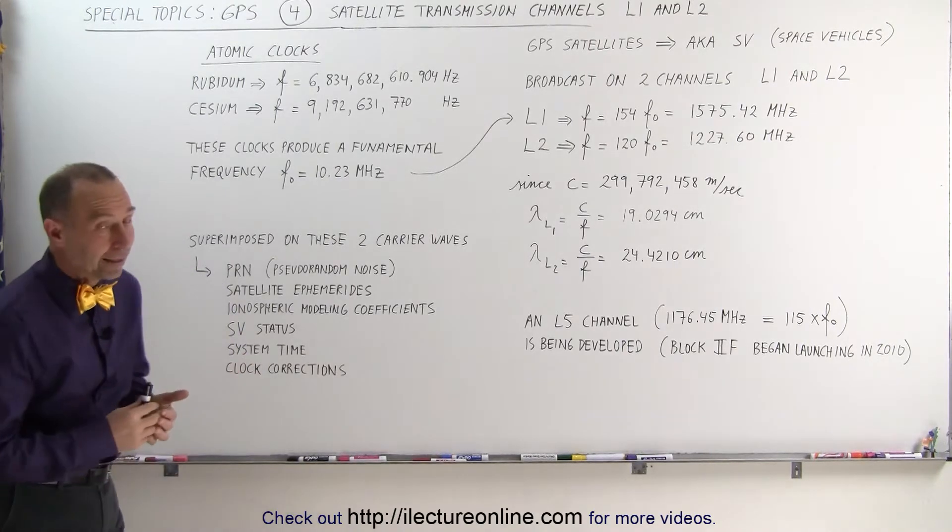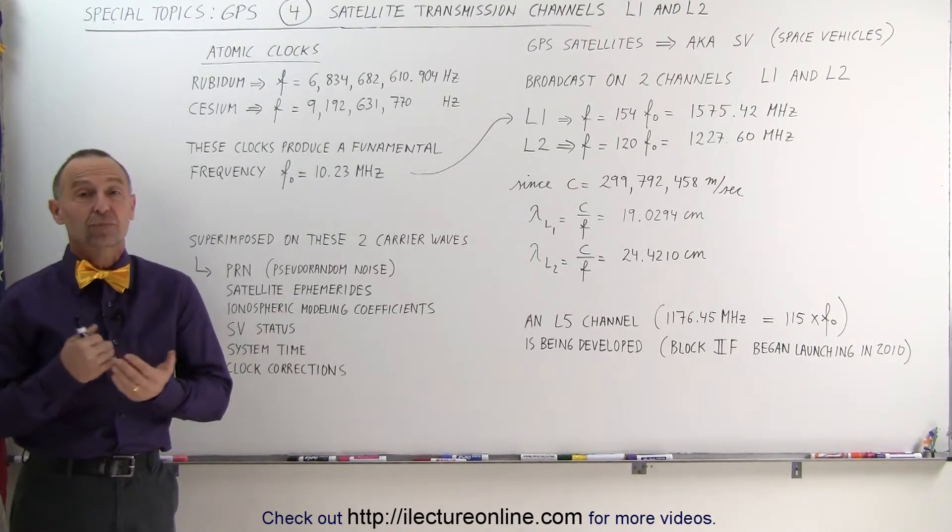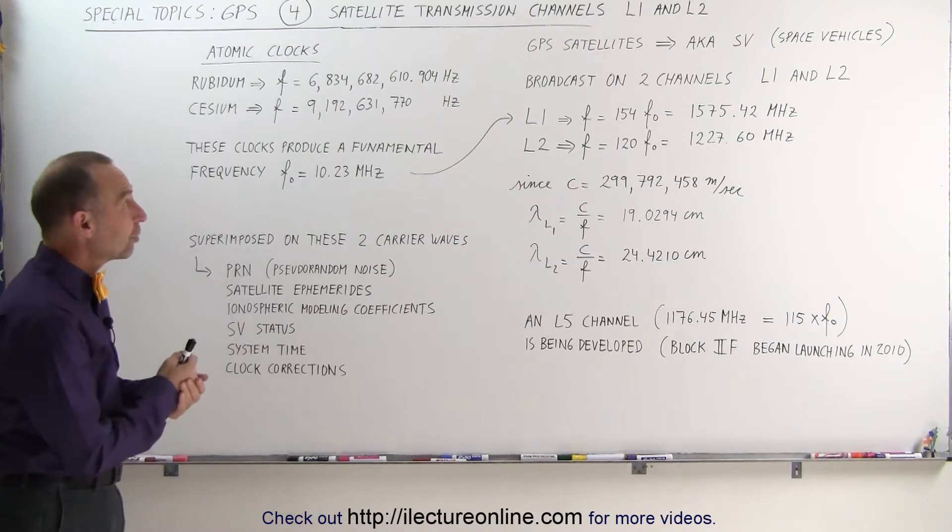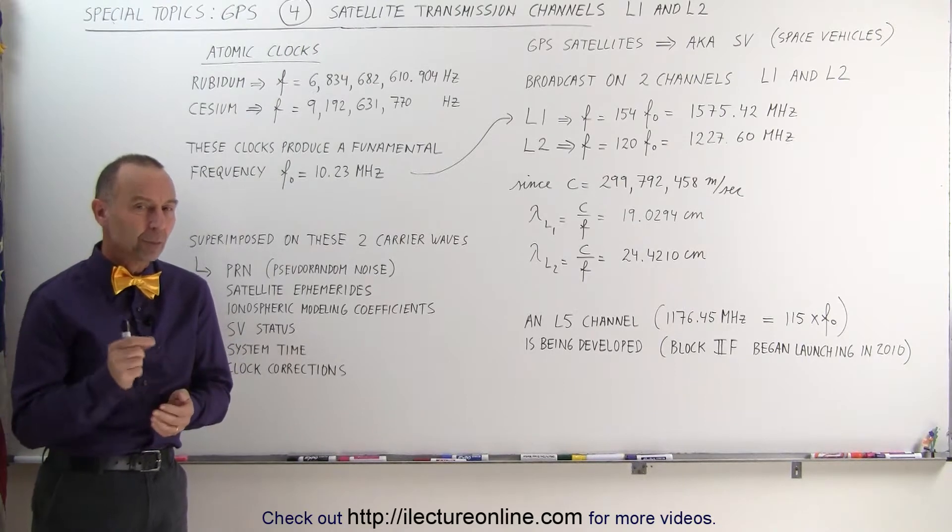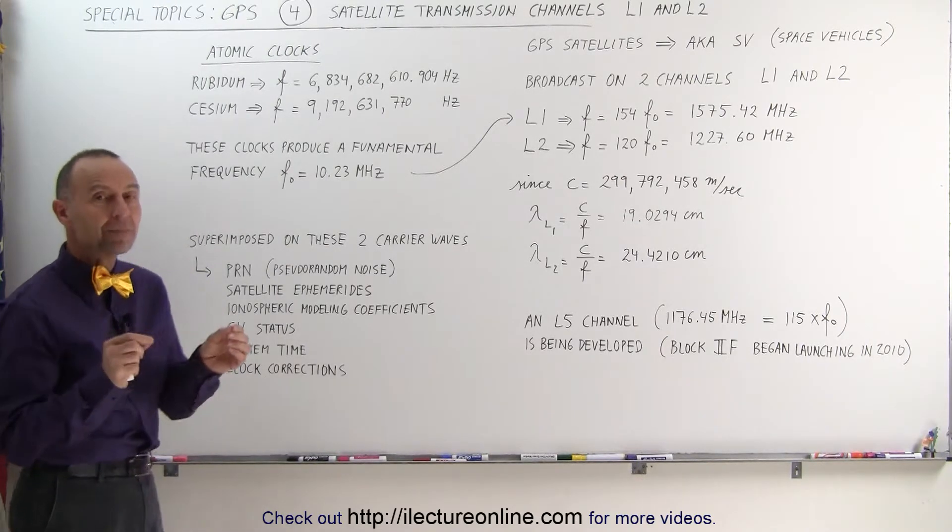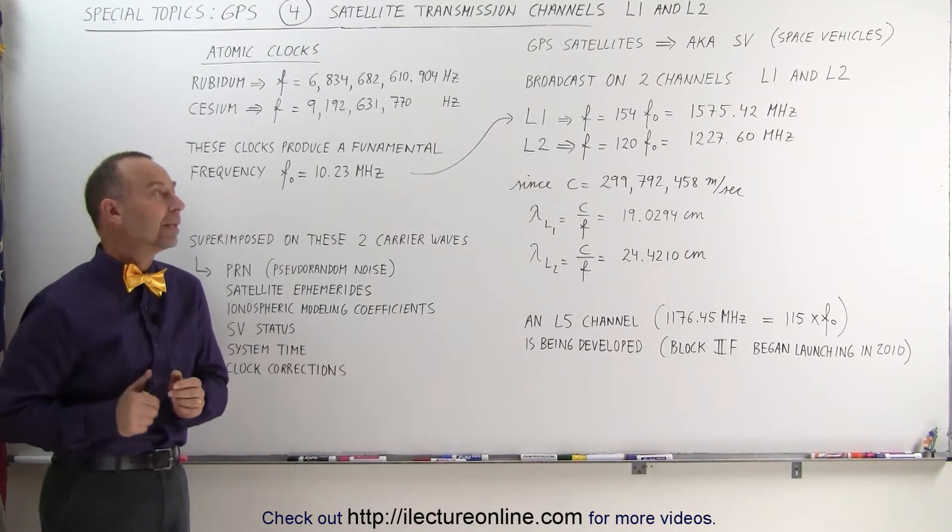Every GPS satellite, also known as SVs or space vehicles, have two channels called L1 and L2. There are additional channels in development like the L5, and we'll talk about those later, but the primary two channels are still the L1 and the L2.